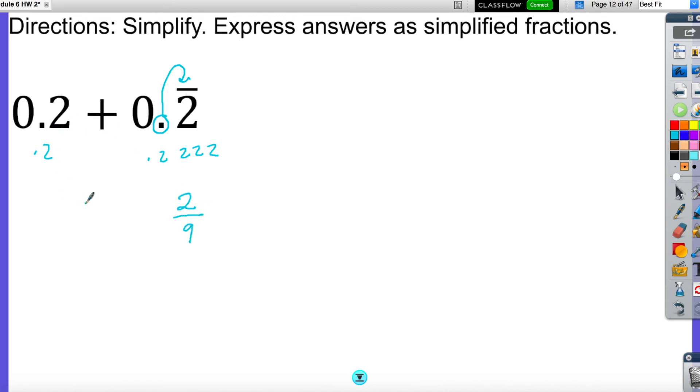This one, it's 2 tenths, so it's just 2 over 10. So to add these up, I need a common denominator. The common denominator is going to be 90, which means I'm going to multiply the numerator and the denominator by 9 here. This is going to give me 18 over 90.